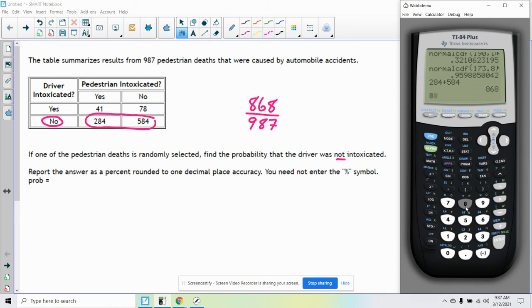So if you want to reduce that, you can put that in your calculator, 868 divided by 987. I don't think it reduces, but let's see. I'm going to hit math. And the first option here is fraction. Hit that twice. Fraction, enter, enter. Oh, it does. 124 over 141.